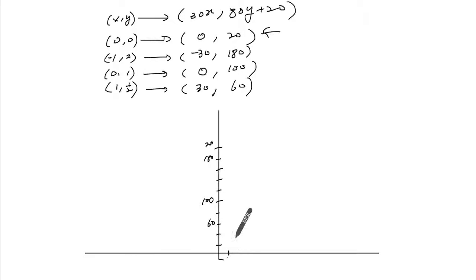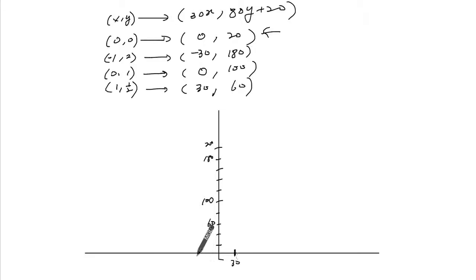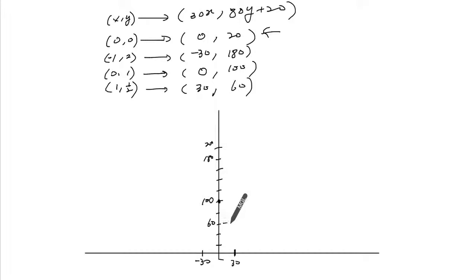Let's not make it perfectly to scale. Let's say this is 30 and this is negative 30. At zero it's 100, at 30 it's 60, at negative 30 it's 180.